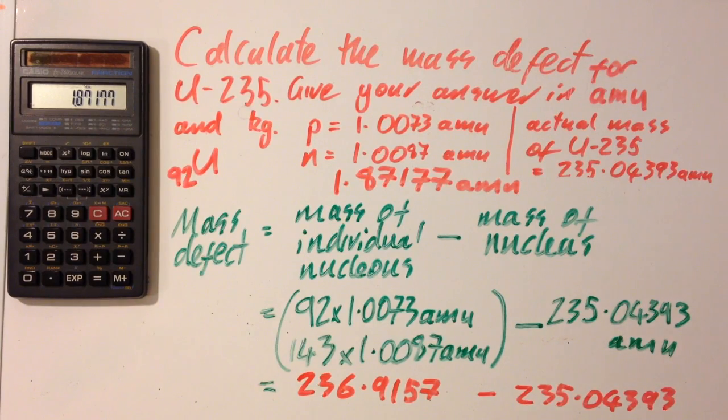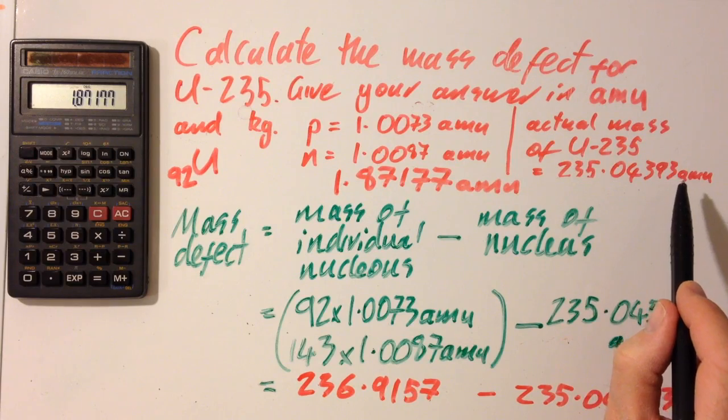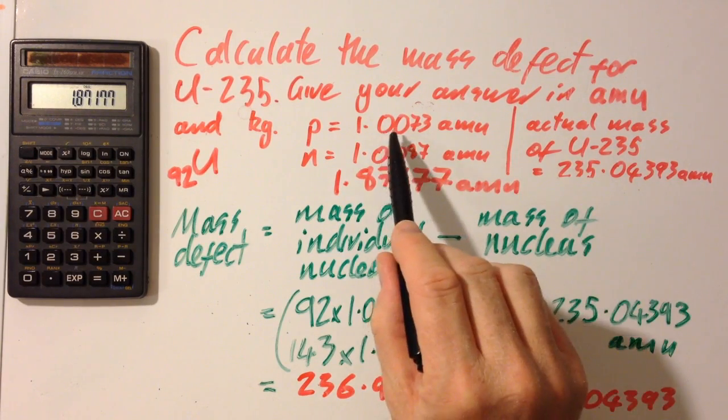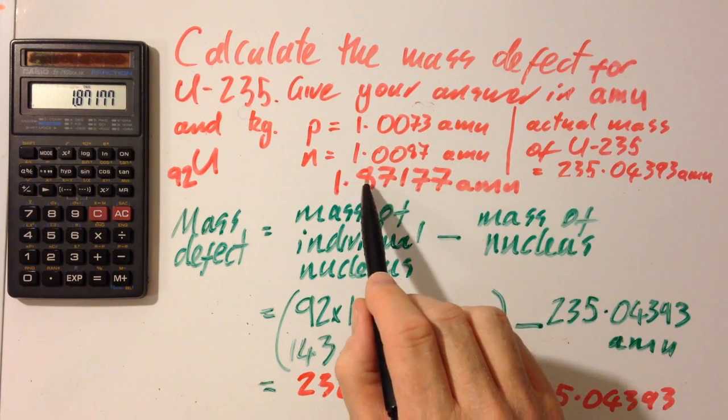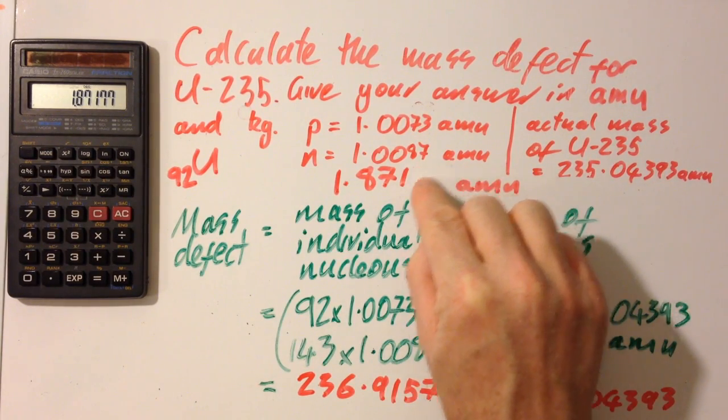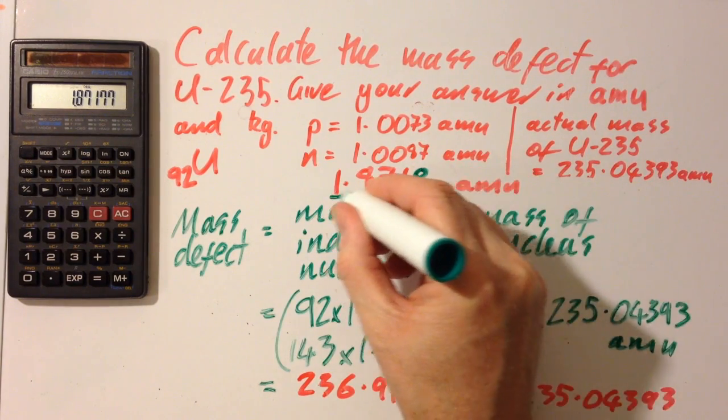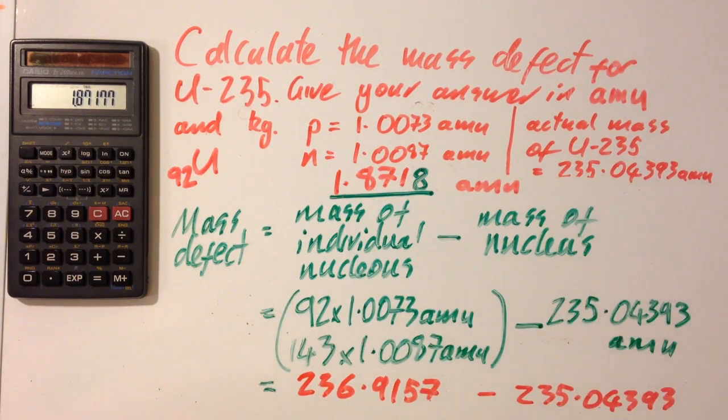Now let's just check the decimal places, because I'm adding and subtracting here. I'm going to need to go with the least number of decimal places in my answers. So this has four decimal places, four decimal places, five decimal places. So my answer is going to need to have four decimal places. So one, two, three, four. So in fact, that goes, and that seven is rounded up. So that would be my answer in atomic mass units.